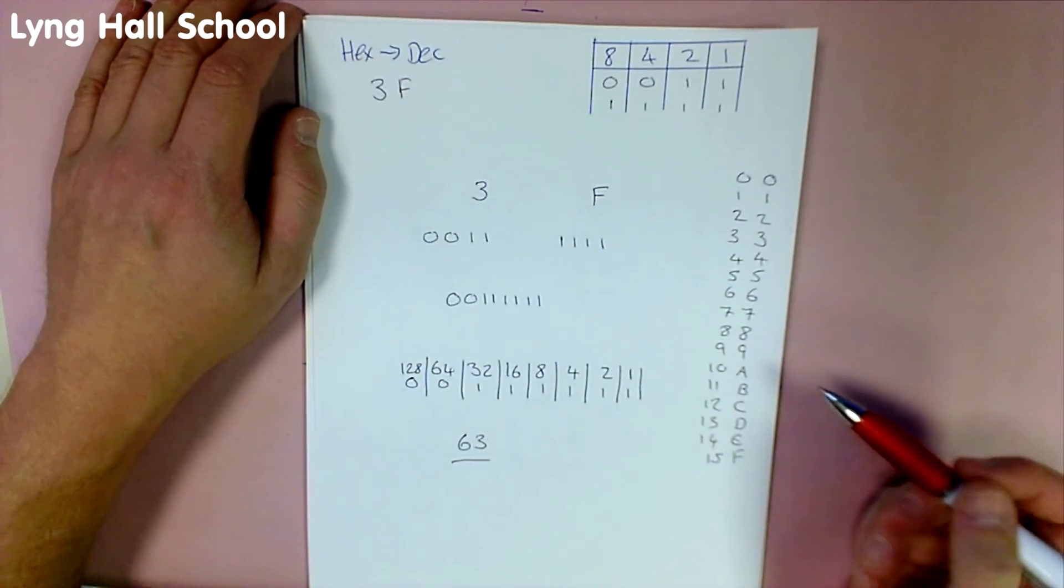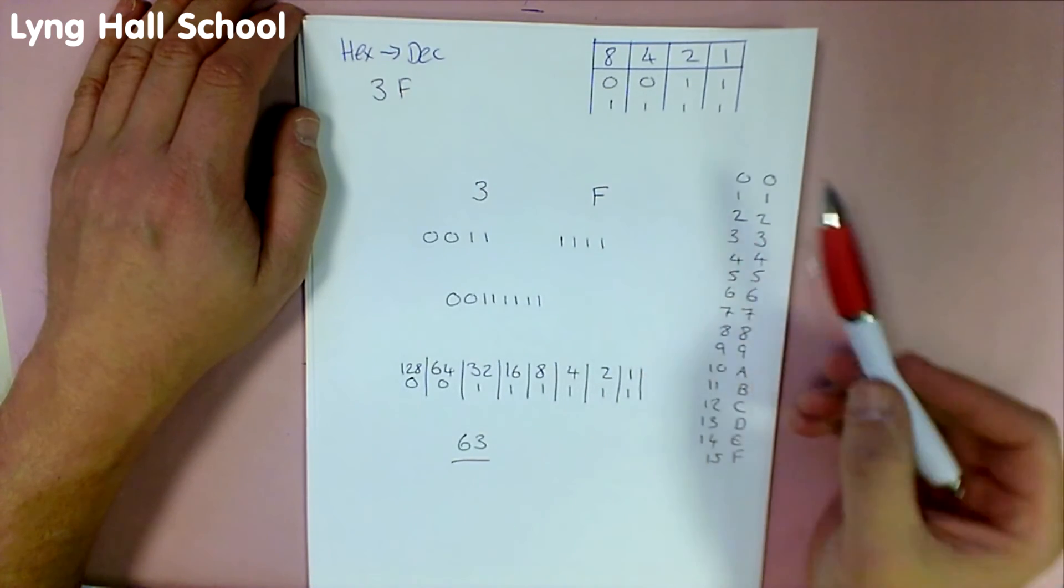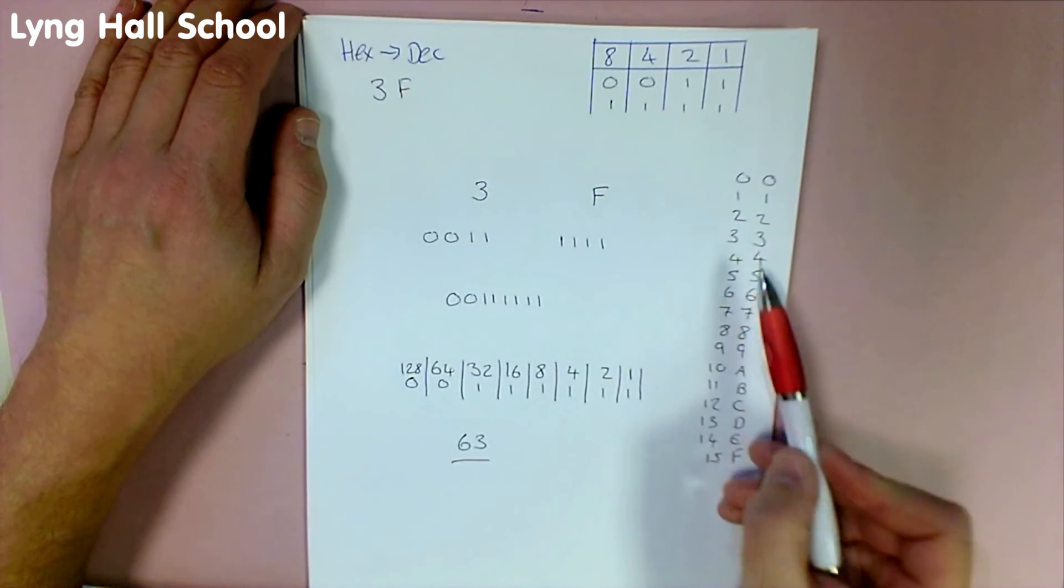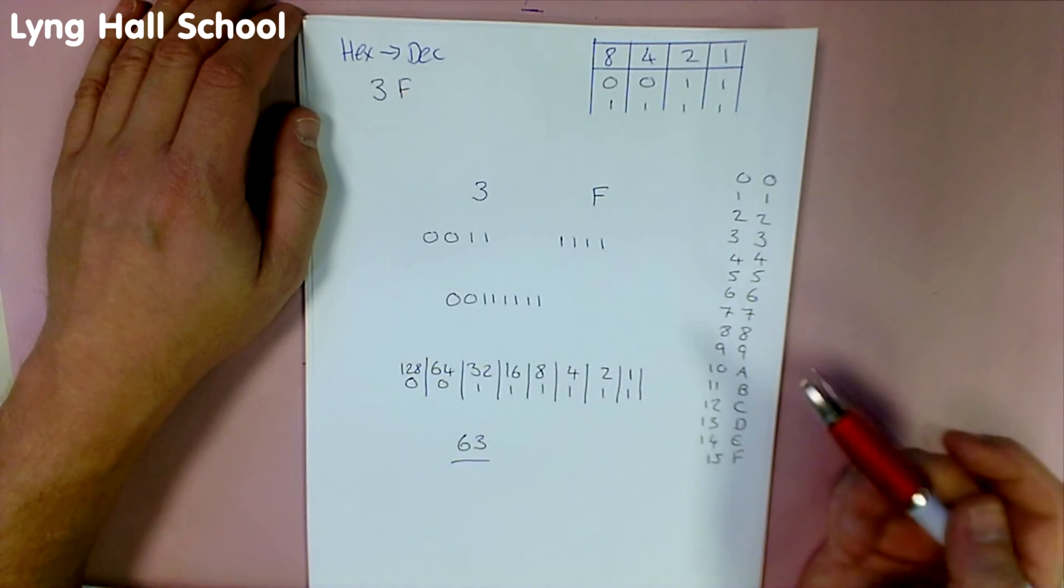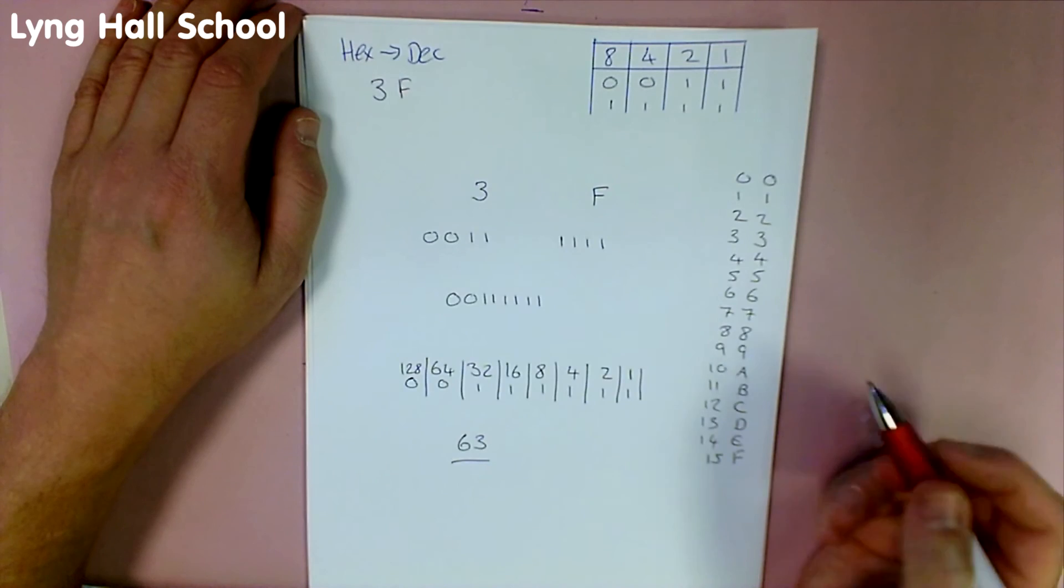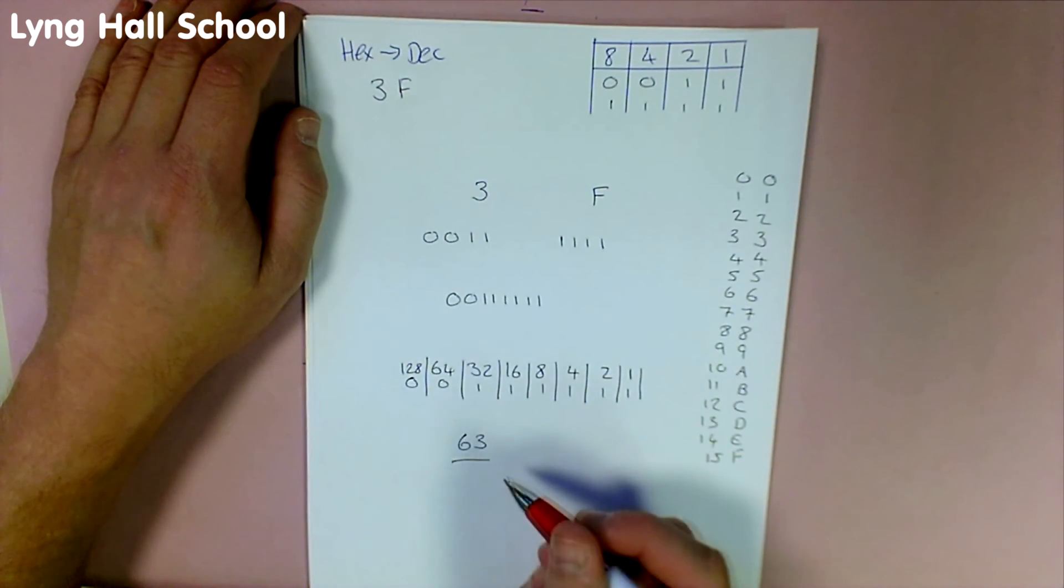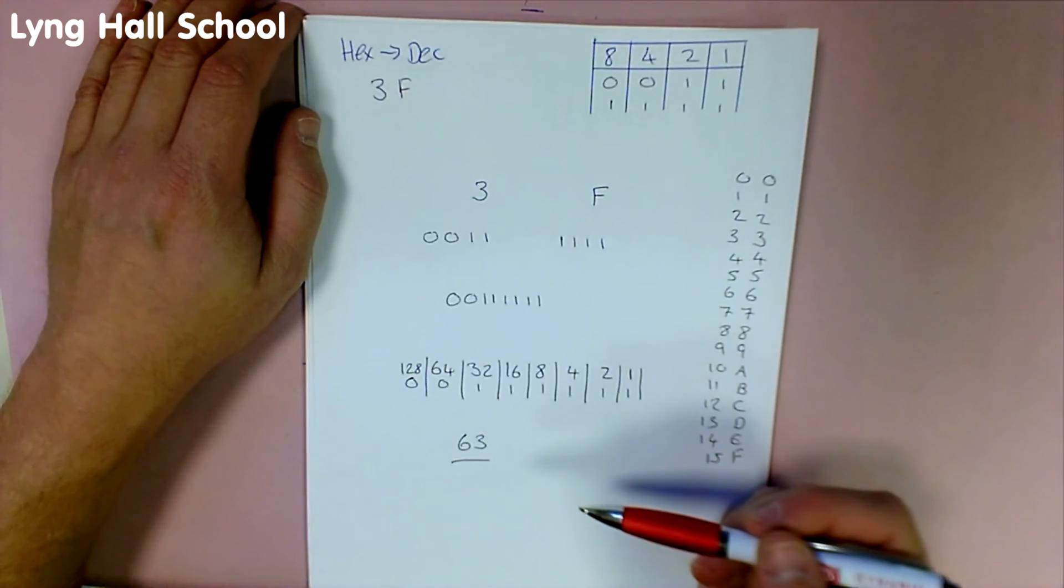The common mistake that people make is because 3 is worth 3 in the hexadecimal conversion chart and 15 would be worth F, that they would add 15 to 3 and come up with the answer of 18. As you can clearly see here, these steps need to happen in order for us to get the correct answer of 63.